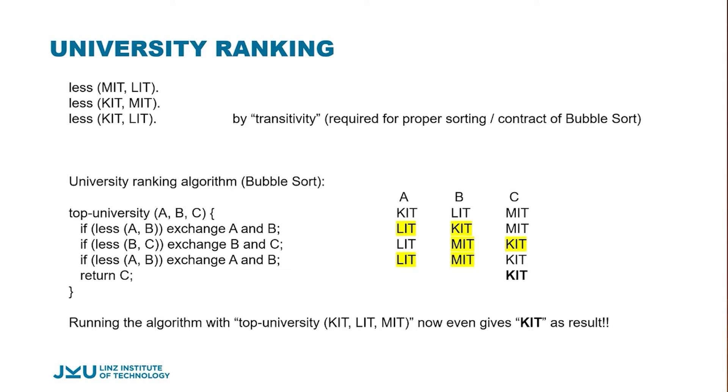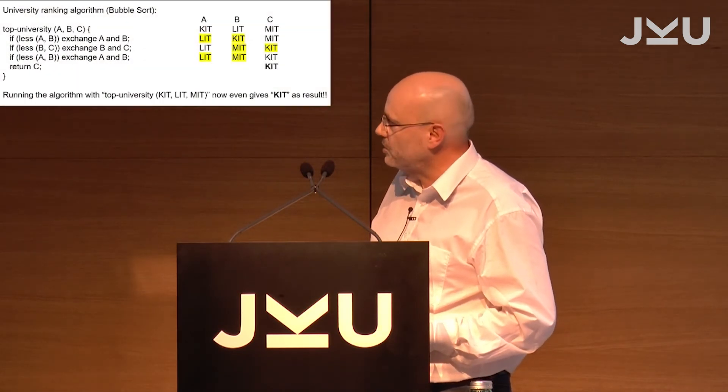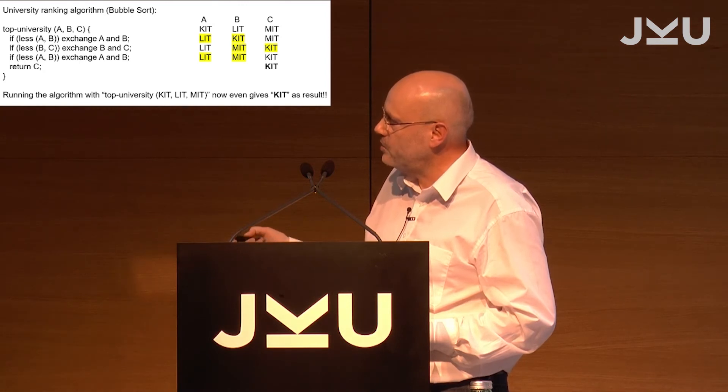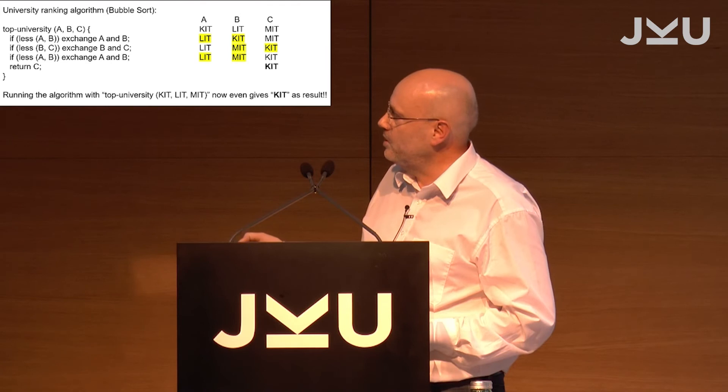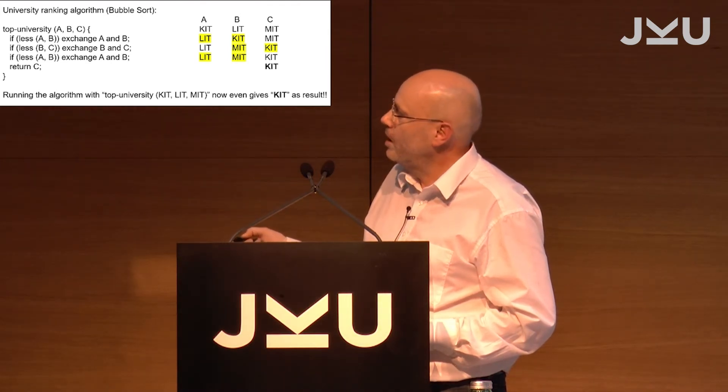The problem is our inductive database is not complete. We need our data set to satisfy a logical property: it must be transitively closed. Looking at the facts — MIT is less than LIT, and KIT is less than MIT — we can deduce that KIT must also be less than LIT. If we add that deduced fact to the database and re-run, suddenly we need to swap KIT and LIT because we now have that fact.